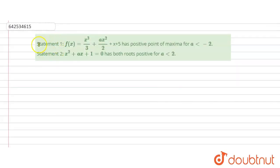Hello students, in this question we have statement 1 and statement 2. Statement 1 says f(x) = x³/3 + ax²/2 + x + 5 has positive point of maxima for a < -2. Statement 2 says x² + ax + 1 = 0 has both roots positive for a < 2. Let's start.